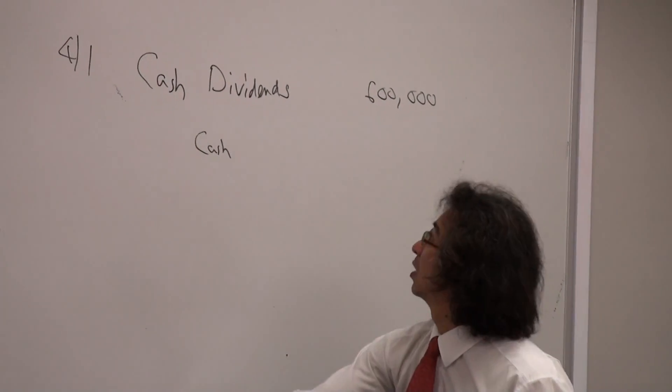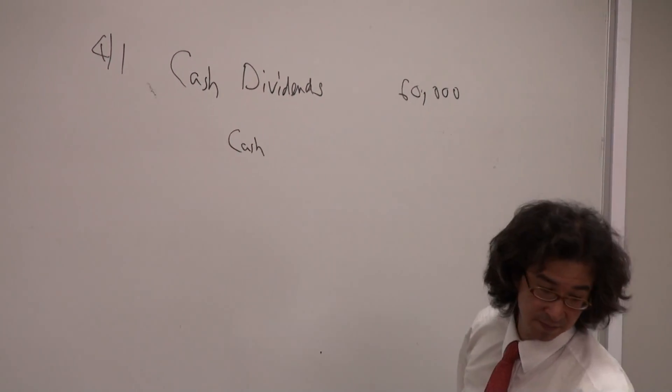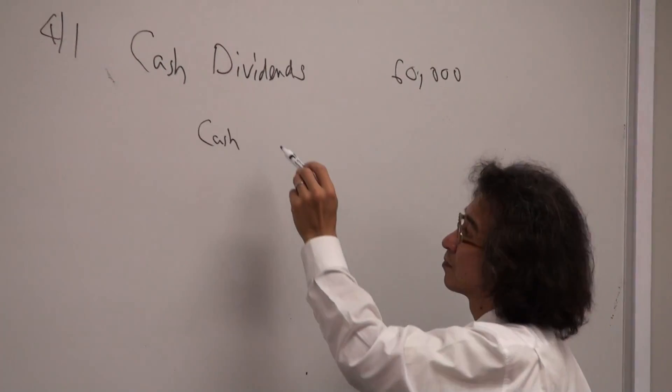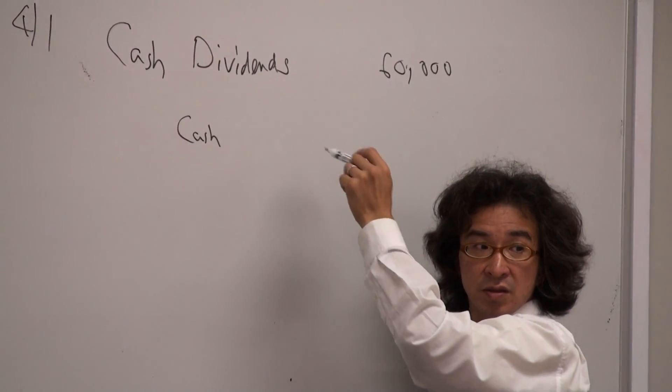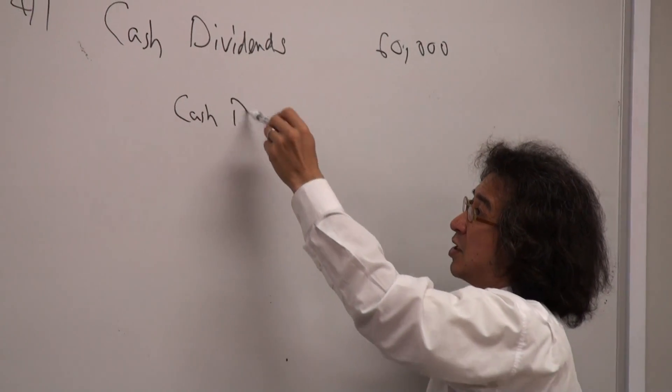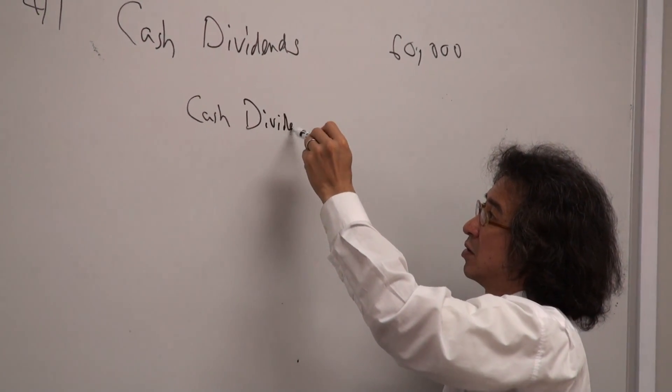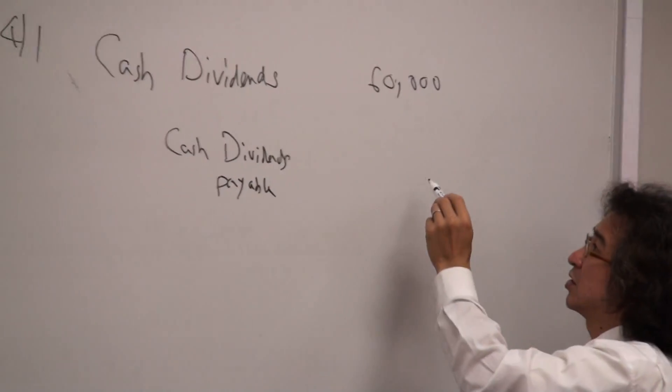I'm sorry, I said $60,000. What's the other entry here? For the other one, what are the entries? Cash dividends payable. How much? $60,000.